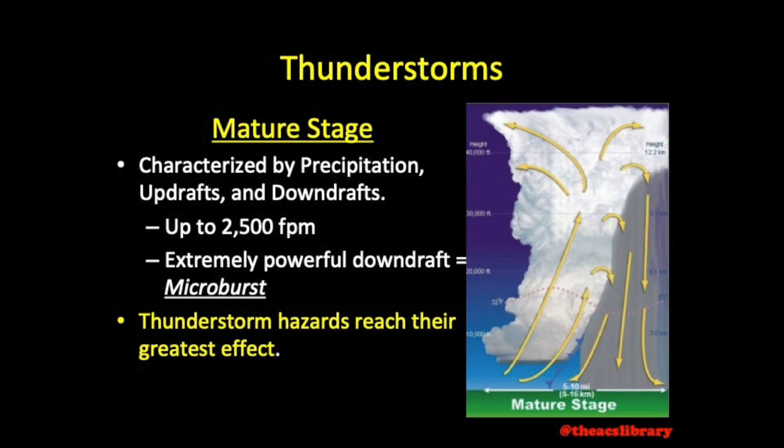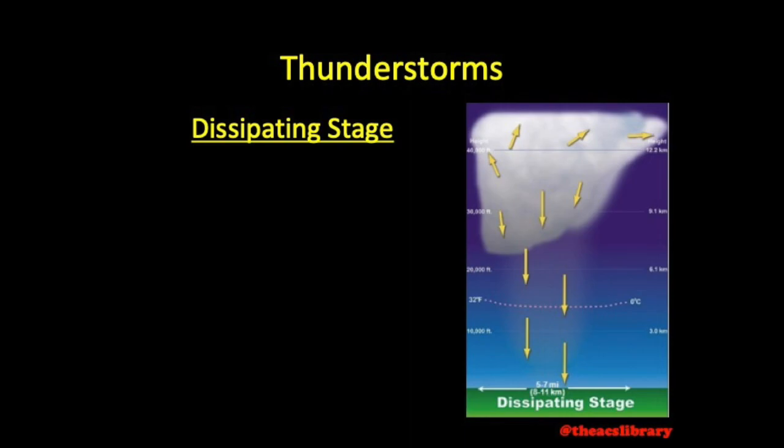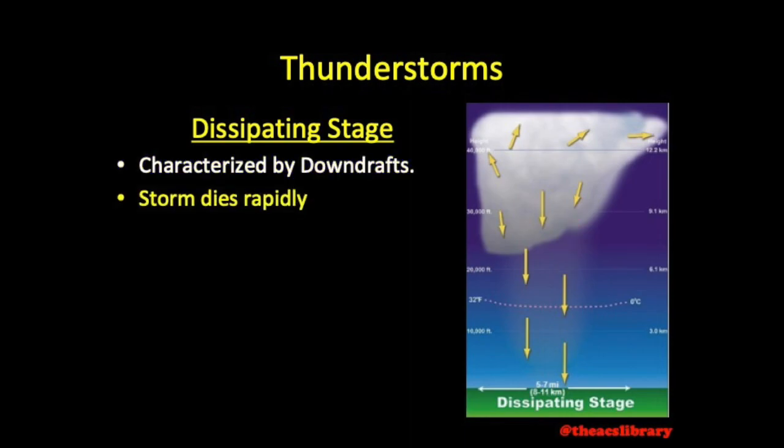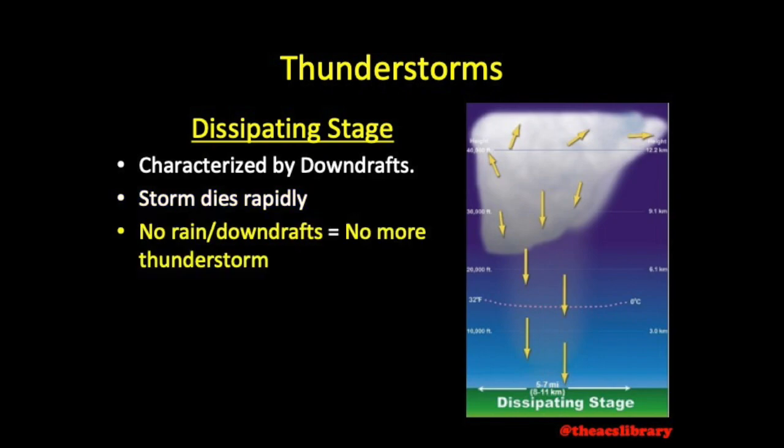The final stage of a thunderstorm's life cycle is known as the dissipating stage, characterized by downdrafts. The storm dies rapidly during this stage. Once rain and downdrafts end, the dissipating stage is complete.